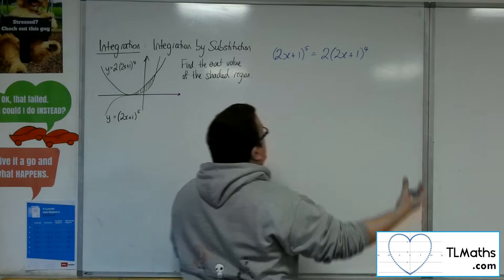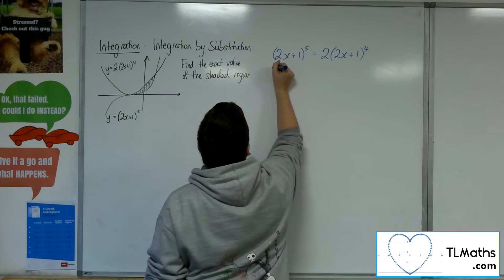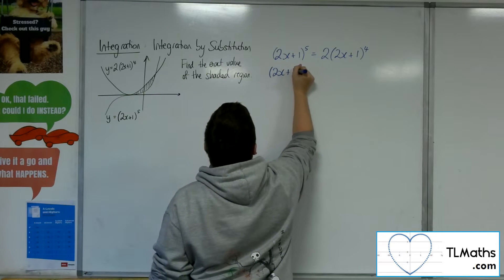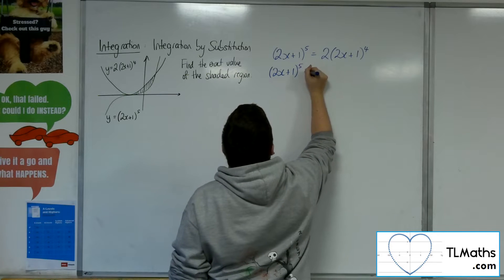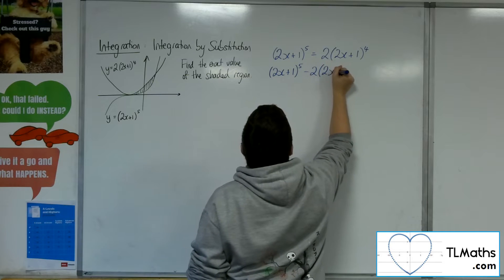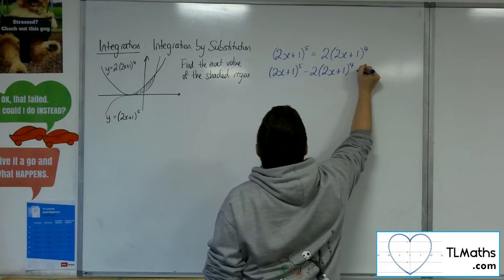Now the way to go about it would be to move everything onto one side of the equation first. So if I write it as 2x plus 1 to the 5, take away 2 lots of 2x plus 1 to the 4 equals 0.